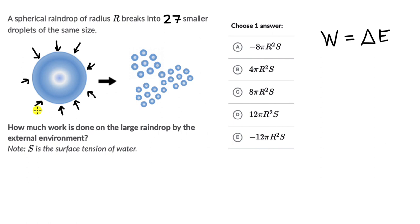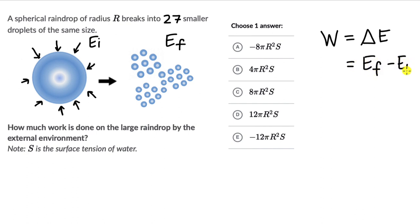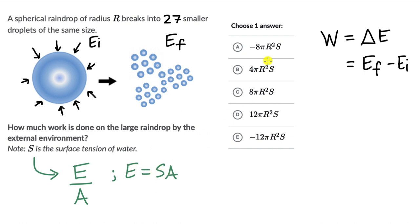We can assume there is no friction, so all the work done on the large raindrop purely leads to a change in surface energy. There is some surface energy initially and some finally: EF and EI, and the change is EF minus EI. Surface tension can be defined as energy per unit area — E by A — so E equals S times A. We include S because it appears in the answer options.